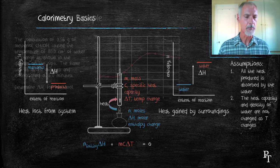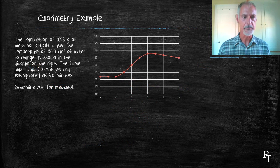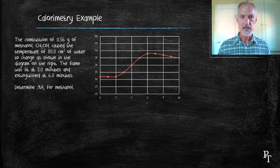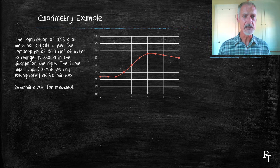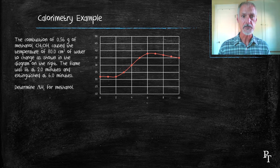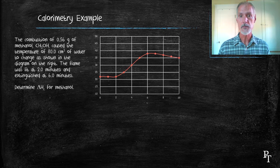Let's use this now in a worked example. I'm going to burn some methanol, 0.56 grams. The data that I've collected here you see on the right is the temperature. For the first two minutes, I hadn't lit the burner. Then I lit the burner at the two-minute mark and continued to heat it up until the six-minute mark, at which point I blew out the flame.